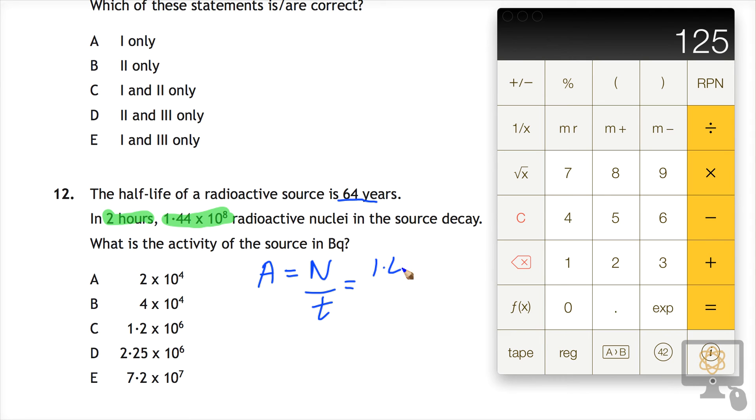So we just put these numbers in, 1.44 times 10 to the 8 over the time which is two hours. Now two hours we need to convert into seconds. So there are 60 minutes in an hour and 60 seconds in a minute. So we need to multiply 2 by 60 by 60.